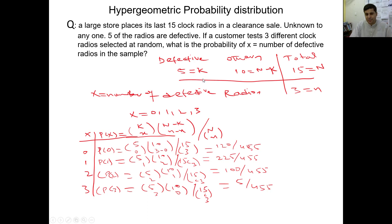We have 5 defective radios, denoted by k, and the remaining n minus k = 10. Total n is 5 + 10 = 15. The sample the customer selects is 3, so small n = 3. Now we want to construct the probability distribution function for these radios.